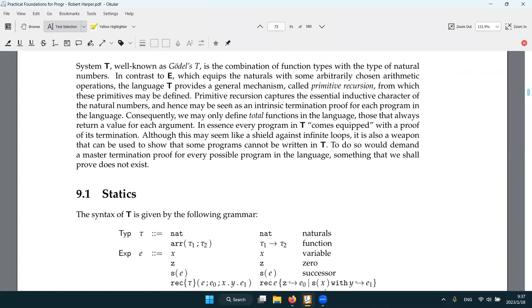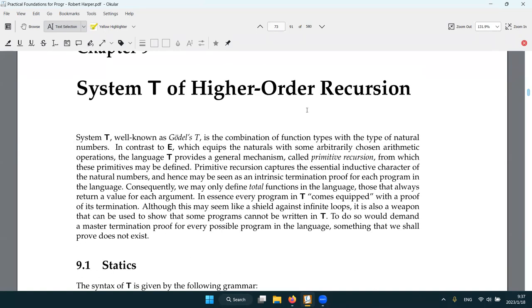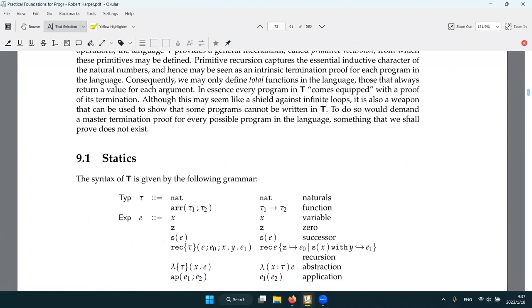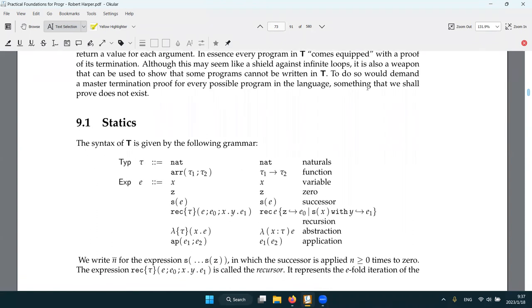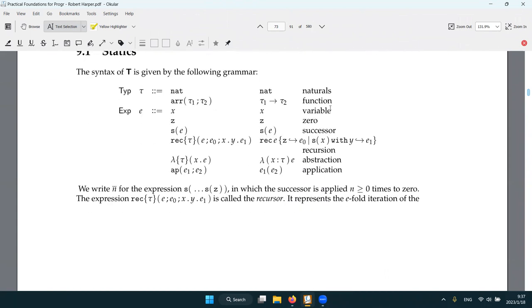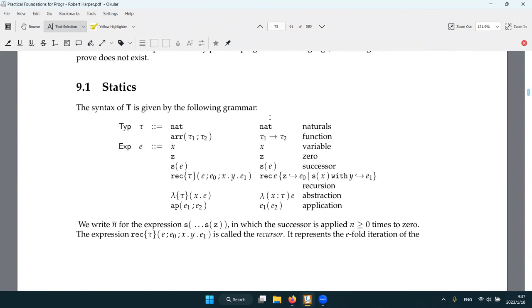So the idea is like we do induction on natural numbers. So since natural numbers are always finite, we actually will always terminate. So in this language, since we only have this higher order recursion, our functions are total functions because they always return a value for each argument. I think that's only primitive recursive functions. Like in general, recursive may not be total. A function like f call f and then call f is just we never terminate. But in here, we guaranteed to terminate.